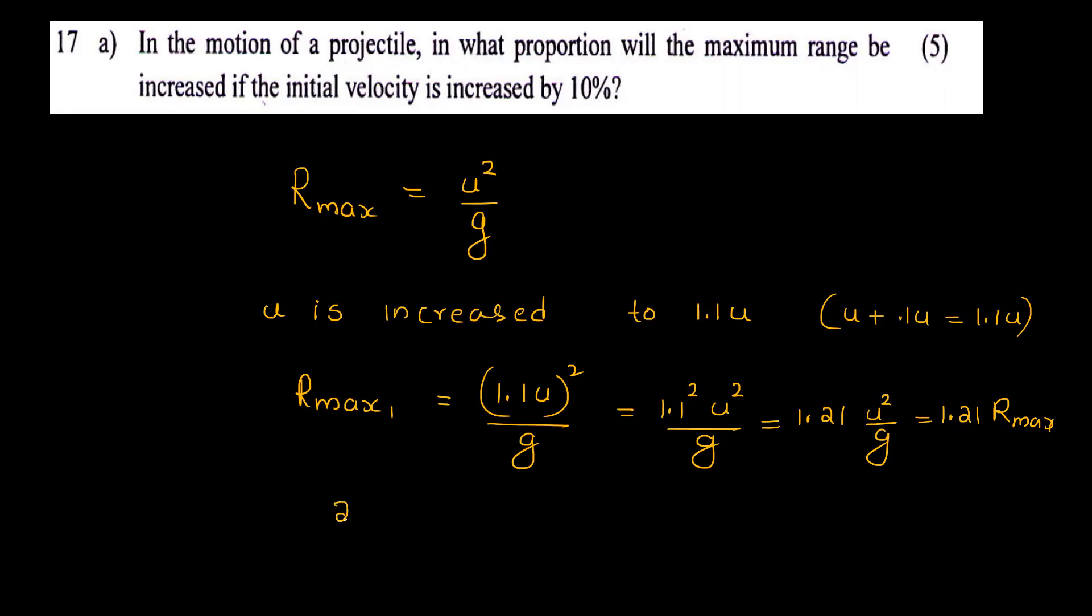So the percentage increase of R max is 21 percent. We have 1.21 u square by g equals 1.21 R max.